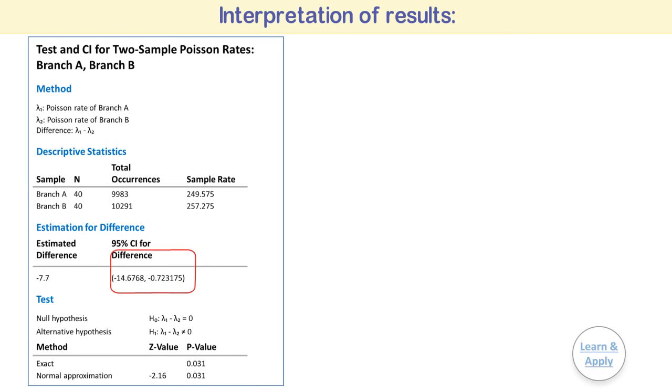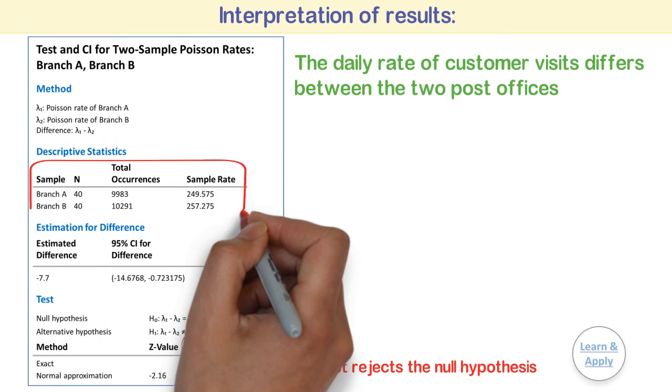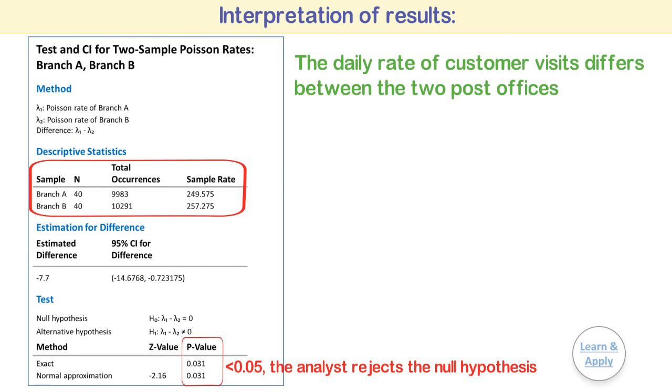The null hypothesis states that the difference in the daily rate of customer visits between the two post offices is 0. Because the p-value of 0.031 is less than the significance level of 0.05, the analyst rejects the null hypothesis and concludes that the daily rate of customer visits are different between the two post offices. The 95% confidence interval indicates that Branch B is likely to have a higher rate of customer visits than Branch A.